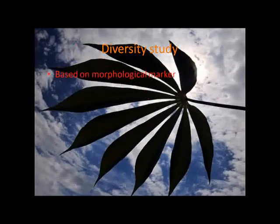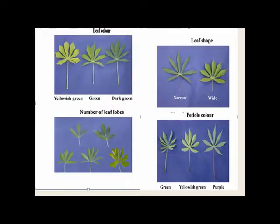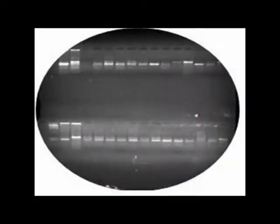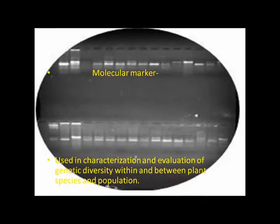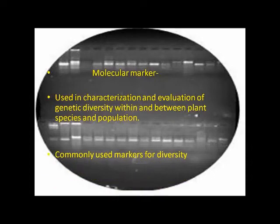Study of genetic diversity is based on morphological and molecular markers. Based on morphological markers, plants are selected by their appearance like shape of leaf, petiole color, leaf color, number of lobes, color of young stem, and tuber shape. Molecular markers are used in characterization and evaluation of genetic diversity within, between, and among plant populations. Commonly used markers for diversity studies are RAPDs, AFLPs, and SSR.